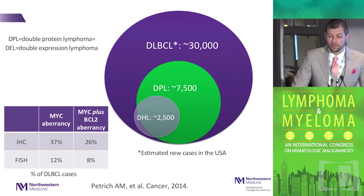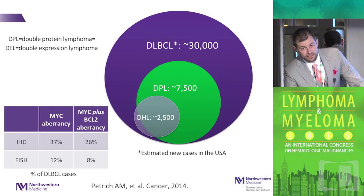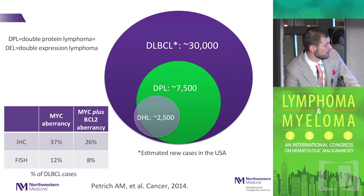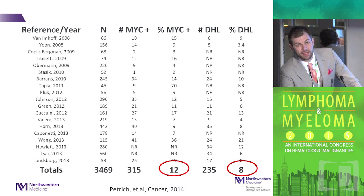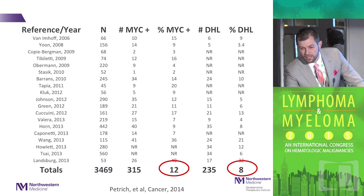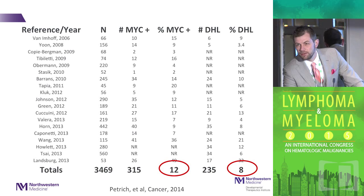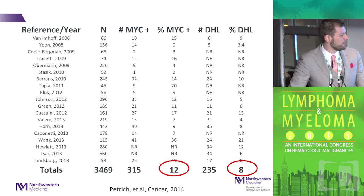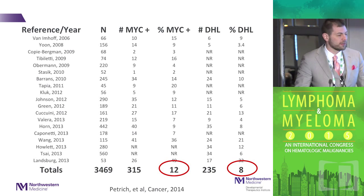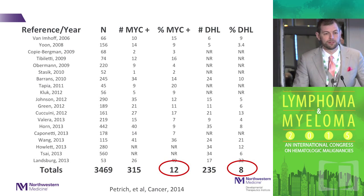We don't have an ICD-9 or ICD-10 code for these, and they're not tracked by SEER, but roughly speaking we think they make up anywhere from 8 to 20 percent of diffuse large B-cell lymphomas. For a review paper we published in Cancer last year, we went through and calculated the numbers based on papers that have been presented. There's wide variability in percentage of MYC rearrangement and percentage of double hit lymphomas, but totaling them together, we're looking at roughly 12 percent of diffuse large B-cell lymphoma patients.